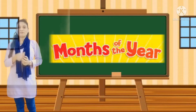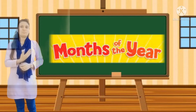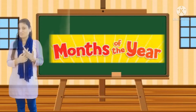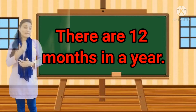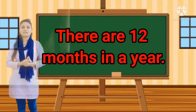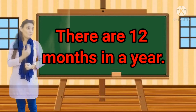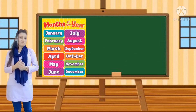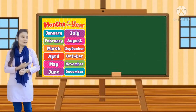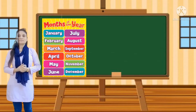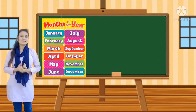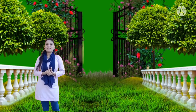Last video में हमने Months of the Year पढ़ाया था और आज हम उसका revision करेंगे। So there are 12 months in the year — याने साल में 12 months होते हैं। Each month has a name — हर month का नाम होता है। सभी हम पूरे 12 months एक साल सीखेंगे। Let's start!